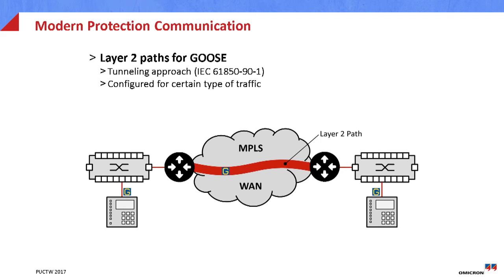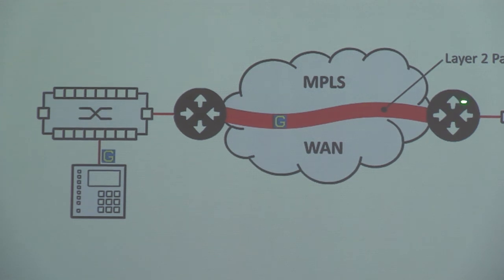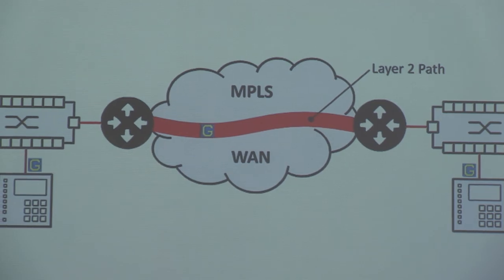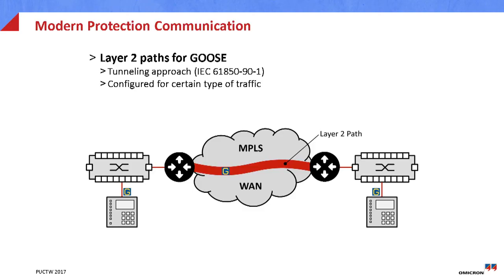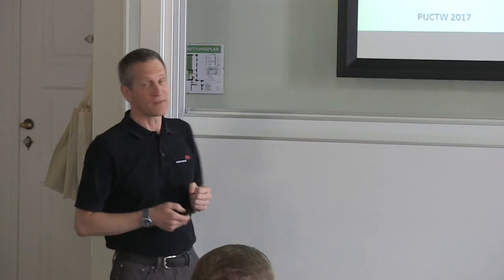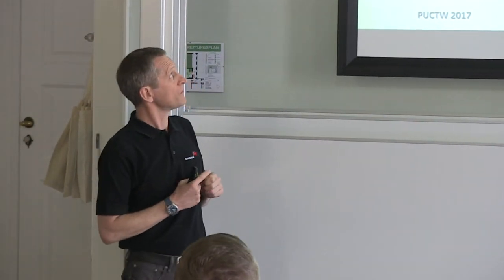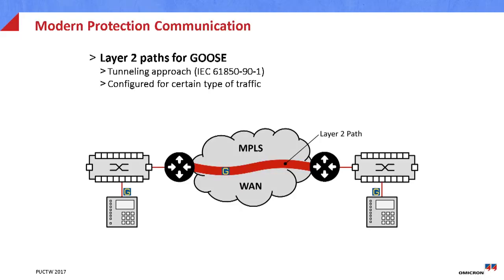In the meantime we got other possibilities. One of them is MPLS, which allows the engineering of layer 2 paths through a wide area network, so GOOSE can travel directly from one end to the other without explicit wrapping. For the user it looks as if you have a big local area network. These technologies are very performant and elegant, though you need to have such networks in place as a precondition.